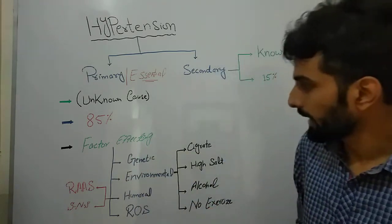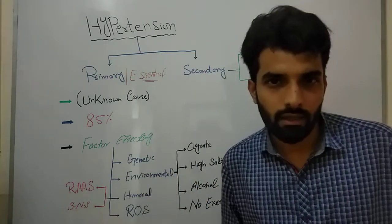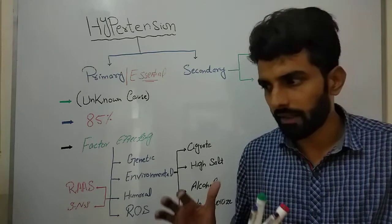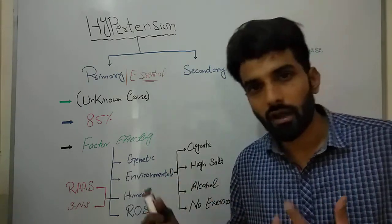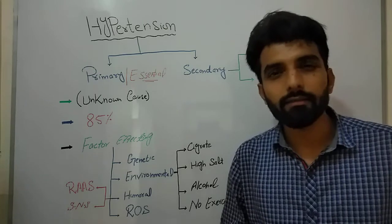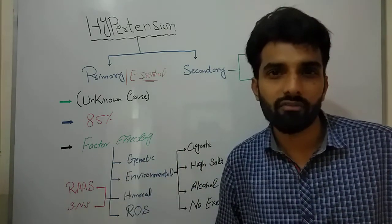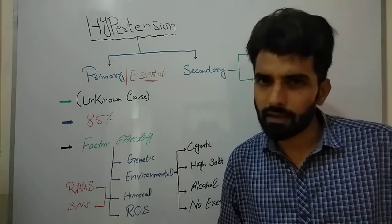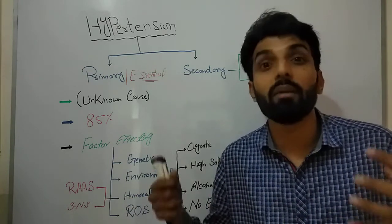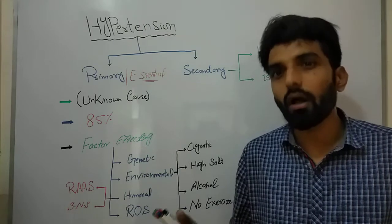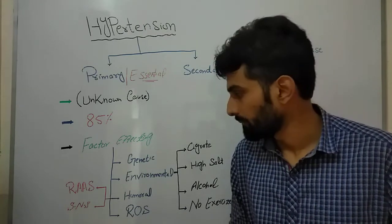There is no specific cause for primary hypertension, but there are factors that influence it. Genetic factors play an important role — certain genes are involved in hypertension and cardiovascular disease. Additionally, people with a family history of hypertension are likely sharing the same environment and environmental factors, which could also explain the familial pattern.